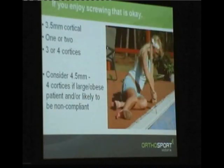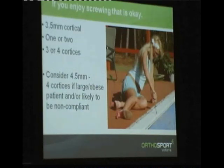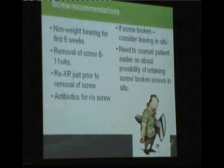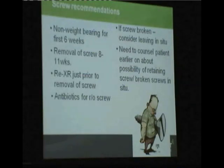If you still prefer screws, use whatever size you're comfortable with. Three or four cortices is fine — the most important thing is making sure the syndesmosis is reduced. For non-compliant or very large patients, a big screw through all cortices will give you confidence. If putting a screw in, take it out between eight to ten or eleven weeks. Re-x-ray just prior to removal to avoid finding a broken screw. Give antibiotics. For patients where you don't want a return to theatre, there is a case for leaving the screw in indefinitely, but if there are symptoms and the screw is intact a few months later, you can easily take it out then.